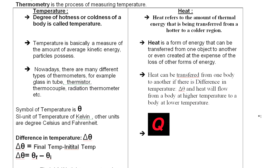Now let's look at heat. Heat refers to the amount of thermal energy that is being transferred from a hotter region to a colder region. Heat is a form of energy, and thermal energy consists not only of kinetic energy but also potential energy. These energies combine to give heat energy, so heat energy is actually energy in transit.